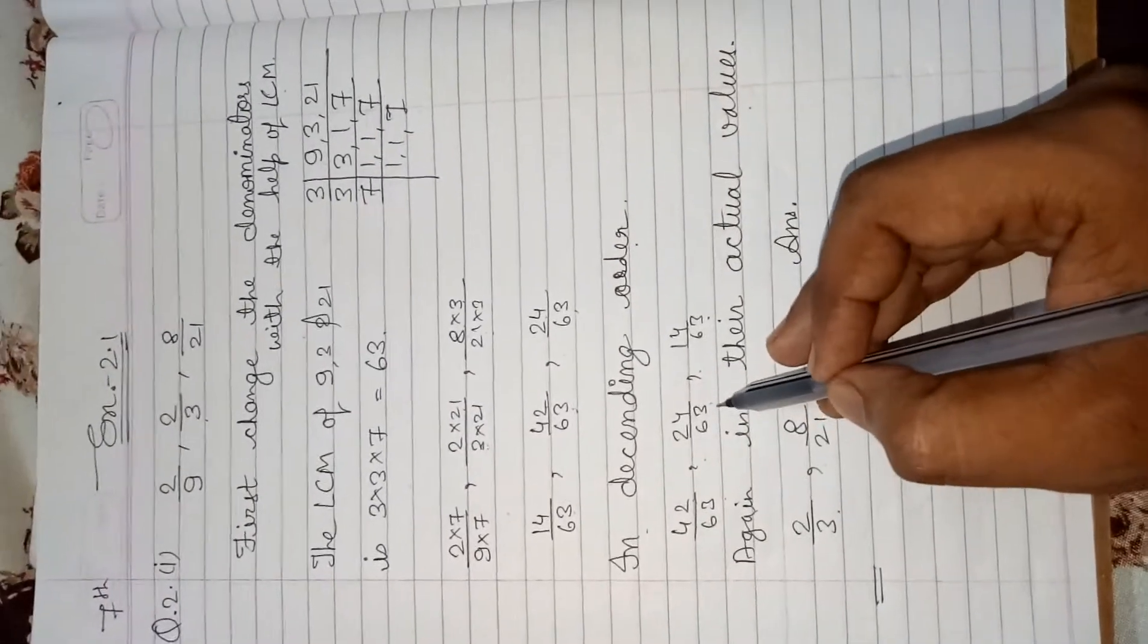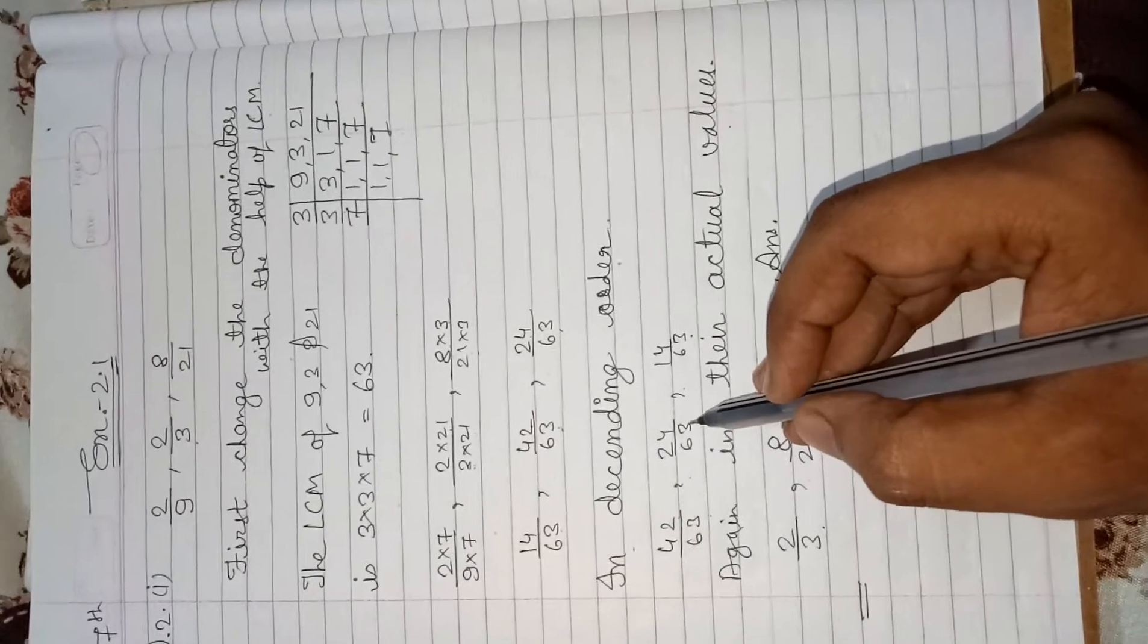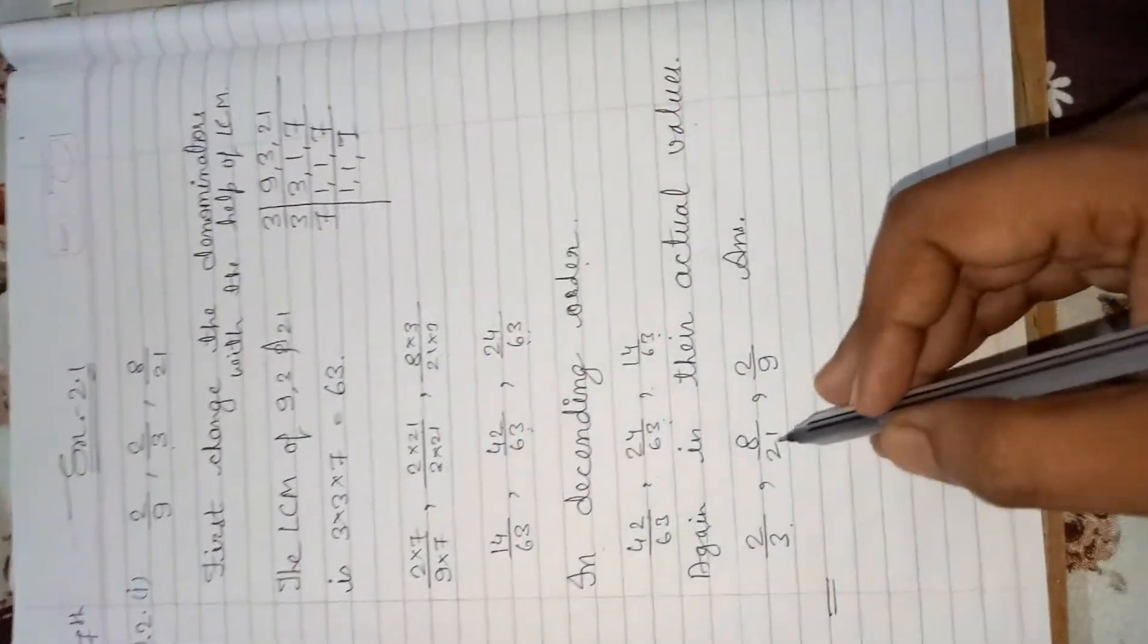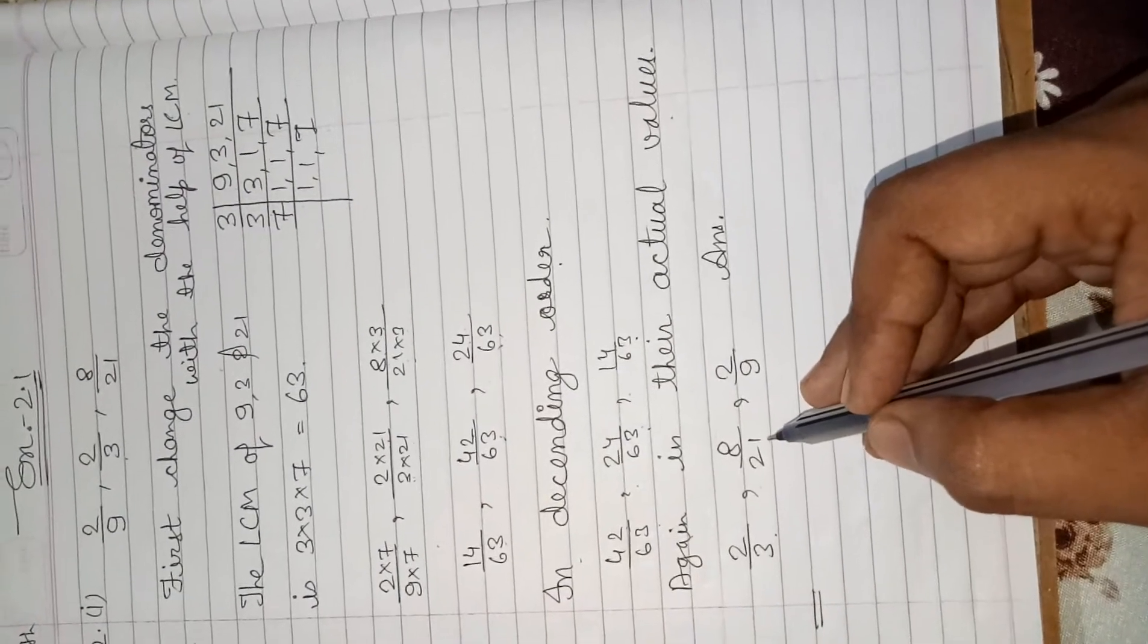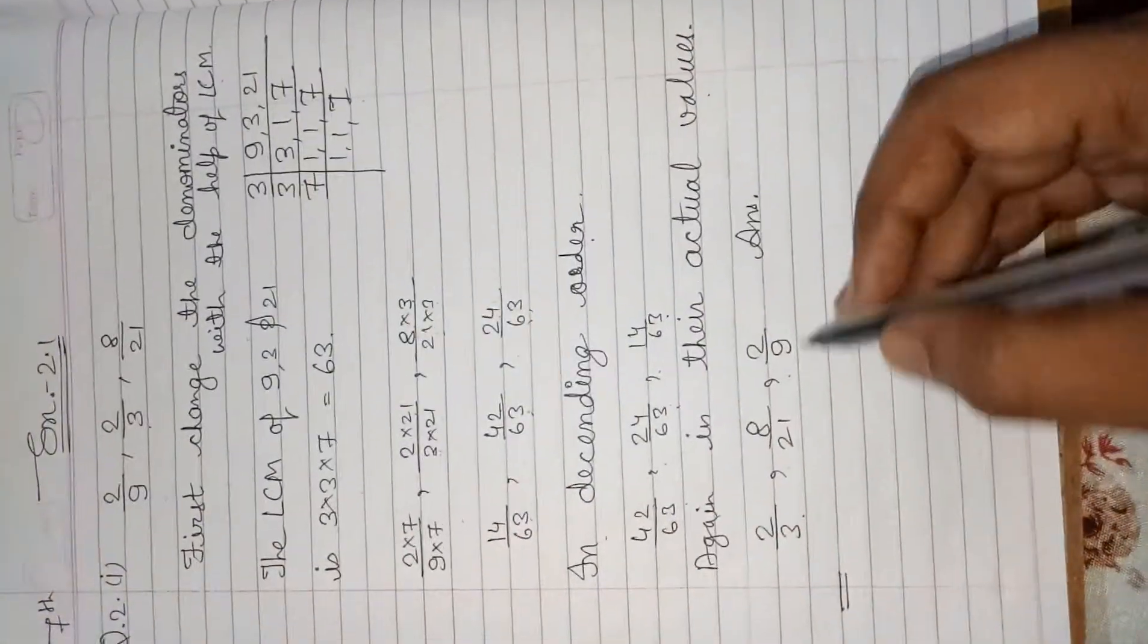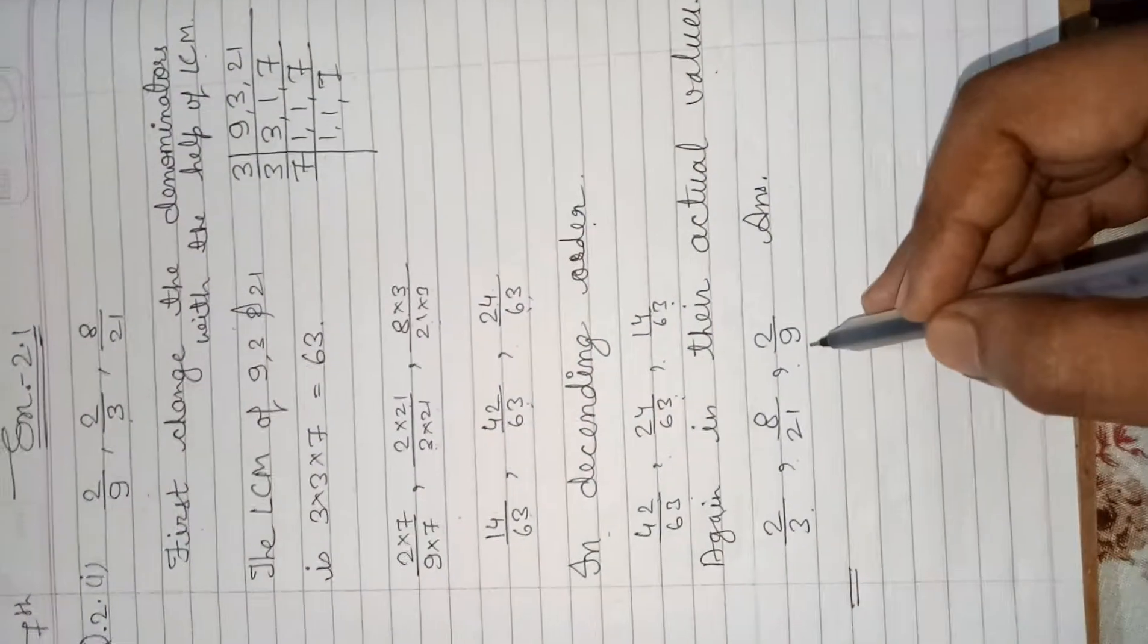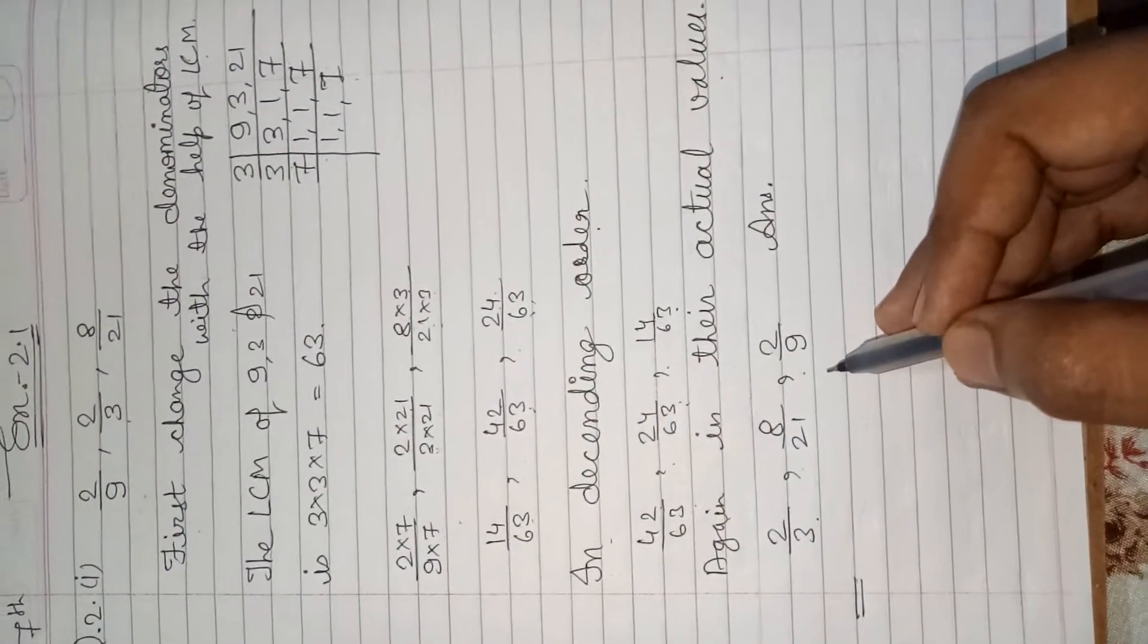24 upon 63, the actual value is third fraction, 8 upon 21. So 8 upon 21 at the second position. At last, 2 upon 9 at the third. So this is the answer. And now, these fractions are in descending order.